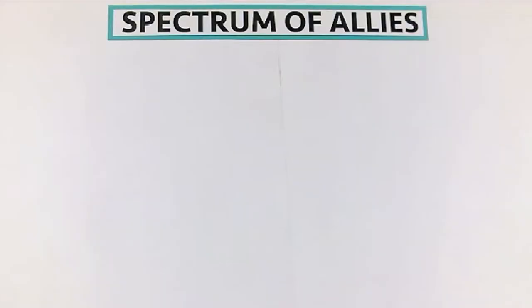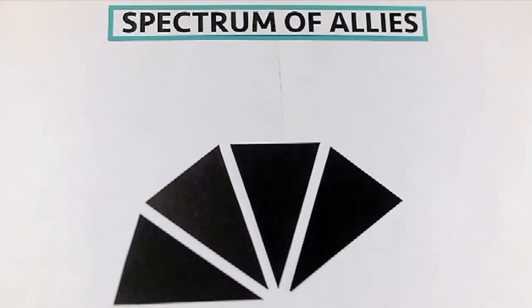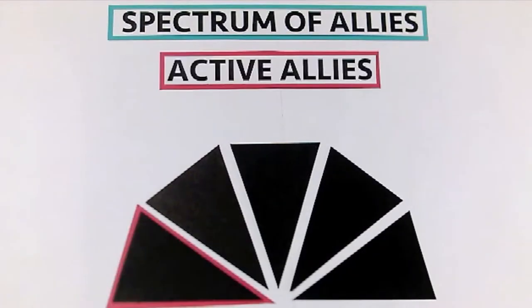The spectrum of allies is a mapping tool that helps organizers map their community and assess where people are in regards to the issue. On the far left you have our active allies — people who agree with us and are actually working alongside us to bring the change that we're seeking.